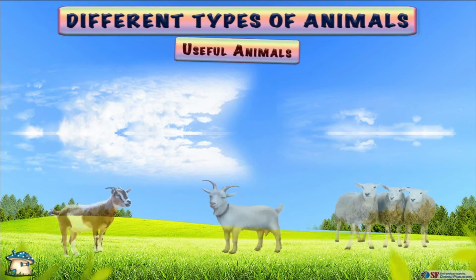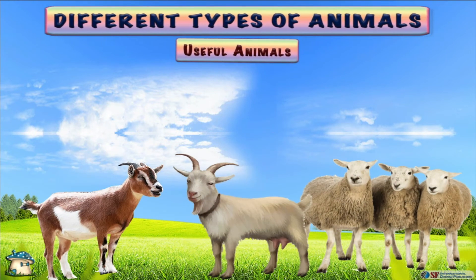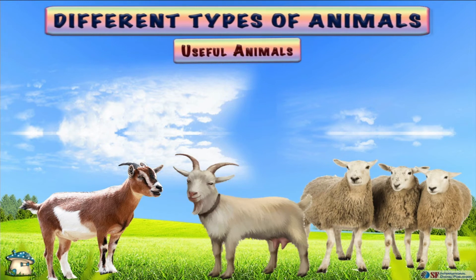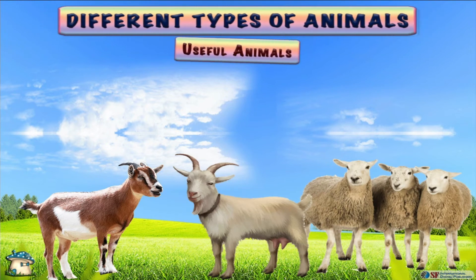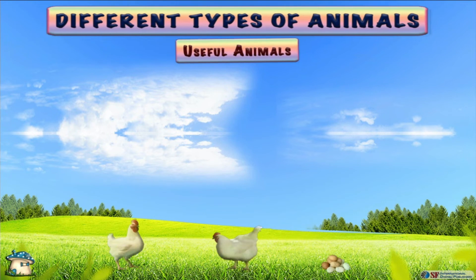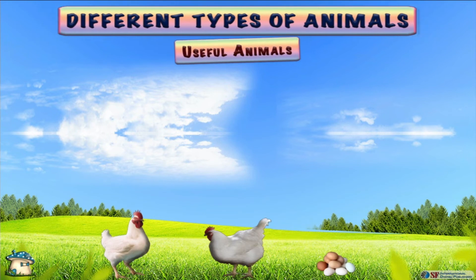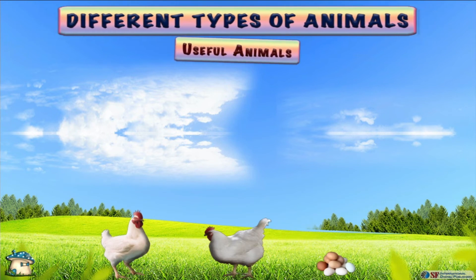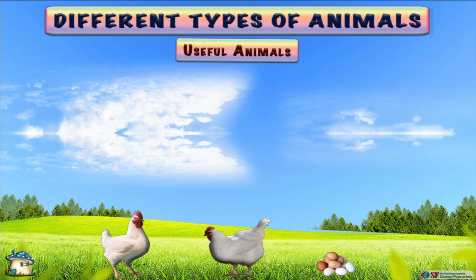Animals like goats, sheep, and cows are used for milk and meat consumption by human beings. Similarly, animals like chickens are used by humans for eggs and meat consumption.